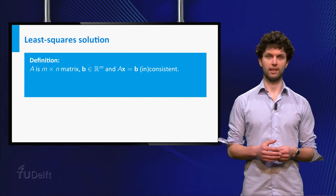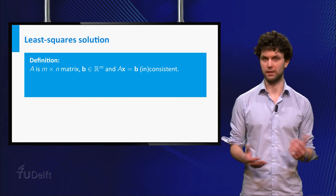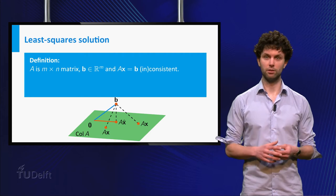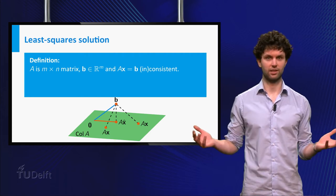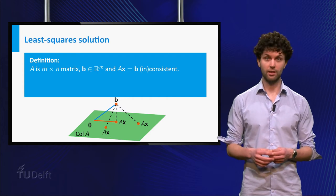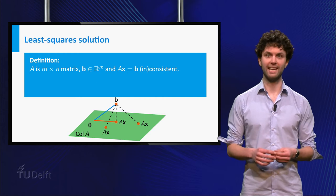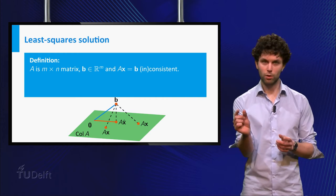If the system is inconsistent, then there exists no vector x such that Ax is b. The best thing we can do then, if we need to find vectors x which are almost as good as a solution, is to find all vectors x for which the distance between Ax and b is as small as possible.